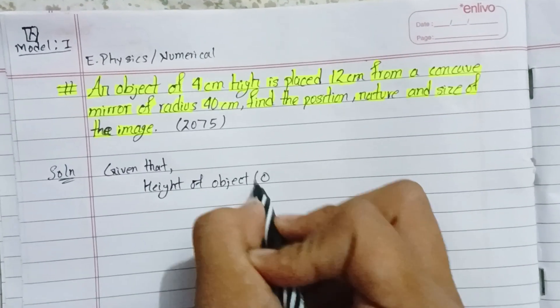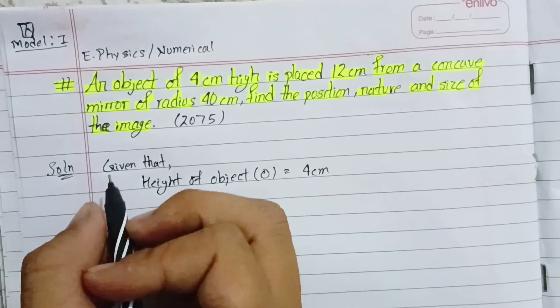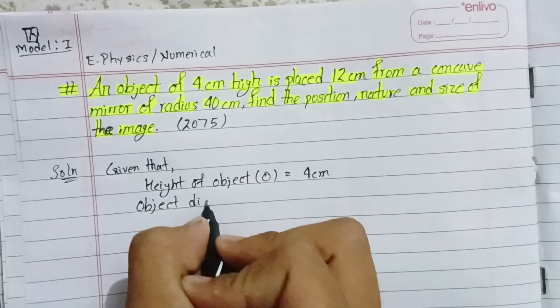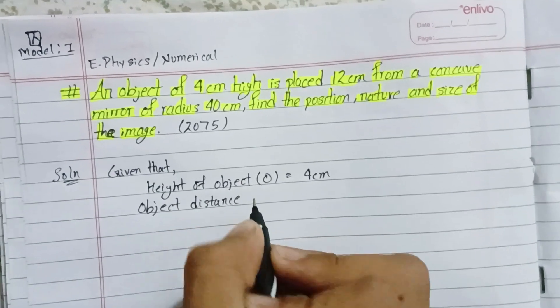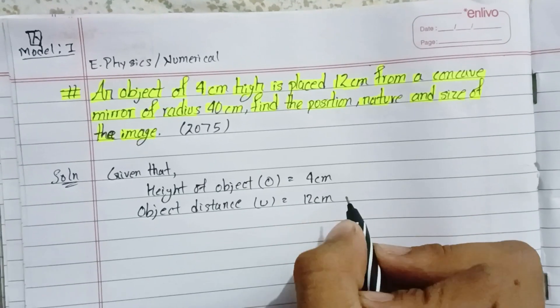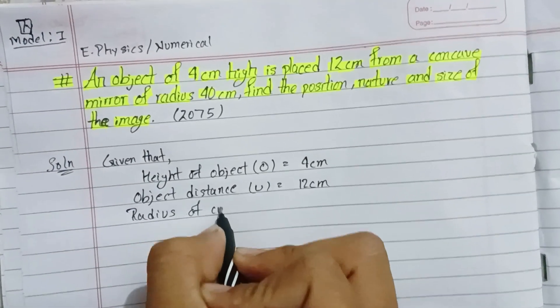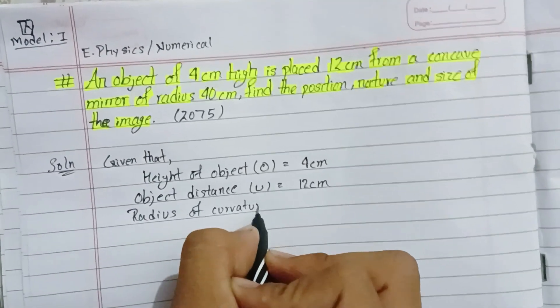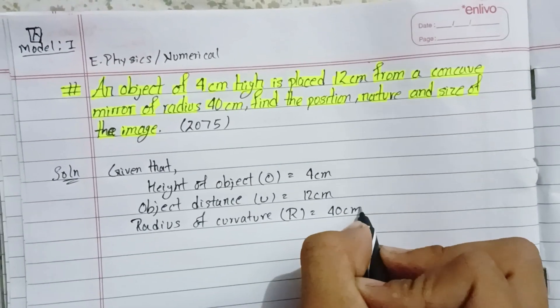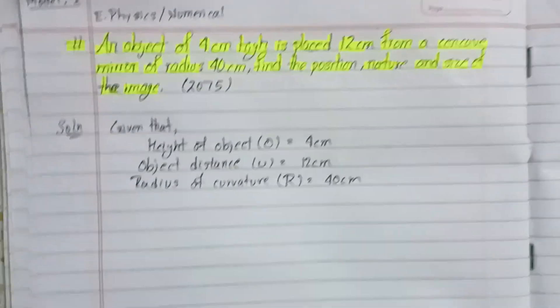Object distance u is 12 centimeters. Radius of curvature R is 40 cm.